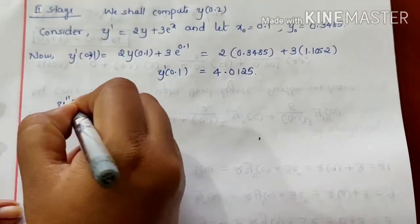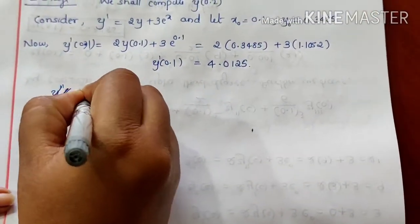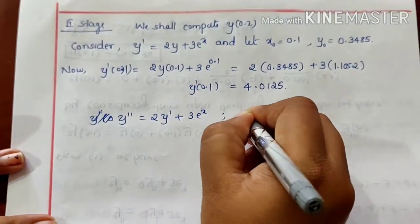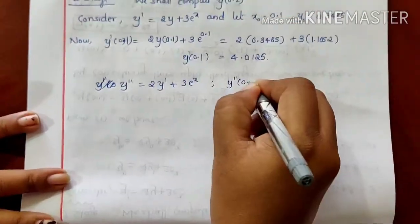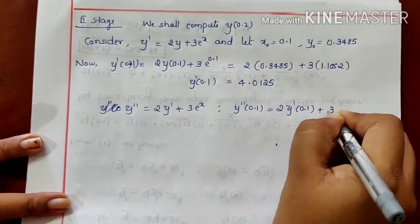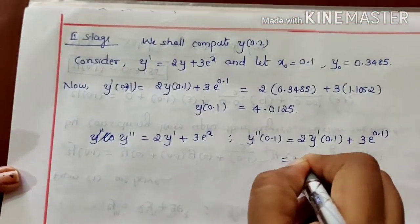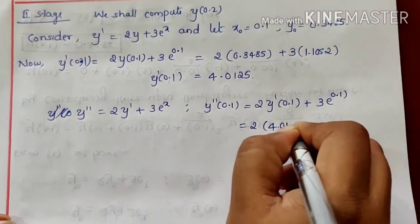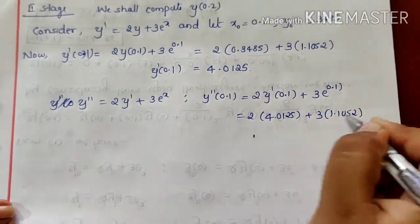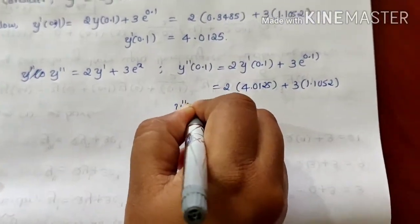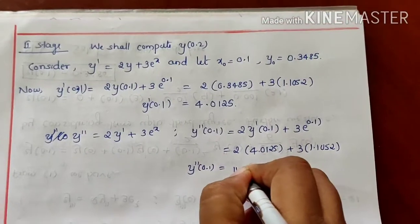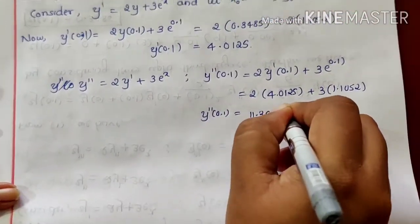Similarly, y double dash is 2y dash plus 3 into e raised to x. Then y double dash of 0.1 is 2 times y dash of 0.1 plus 3 into e raised to 0.1. It is 2 times 4.0125 plus 3 into 1.1052. When you simplify, y double dash of 0.1 is 11.3405.